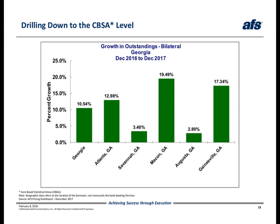Using the pricing dashboard, you can also examine trends within states. Our pricing dashboard is configured to drill down beyond the state level and view trends for specific core-based statistical areas, or CBSAs. For example, we just saw Georgia in the top five states for bilateral loan growth. On slide 13, we can see that the 2017 growth rates for Savannah and Augusta were close to the national average of 3.1%. However, the growth experienced in these two CBSAs was much lower than the aggregate Georgia state rate of 10.5% and the other Georgia CBSAs shown on this slide. This granularity allows you to distinguish the winners and losers very quickly and is the type of data you can leverage to be very competitive in your own markets.